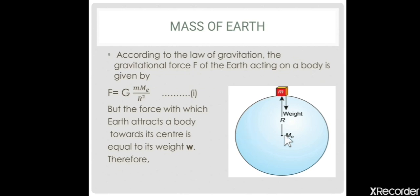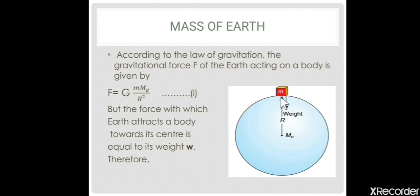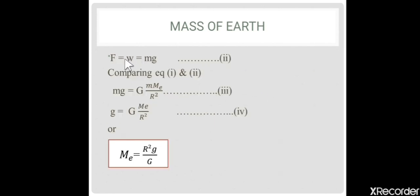According to the law of gravitation, Earth and the small object attract each other with a force called the force of gravitation. Consider this force is F. So the law of gravitation gives: F = G × m × ME / R². Here M1 is m, M2 is ME, and D is R. Give this equation number 1. Earth attracts every object towards its center with the force of gravitation, which always equals the weight of the object. So force of gravitation equals weight, and weight equals mg. Give this equation number 2.